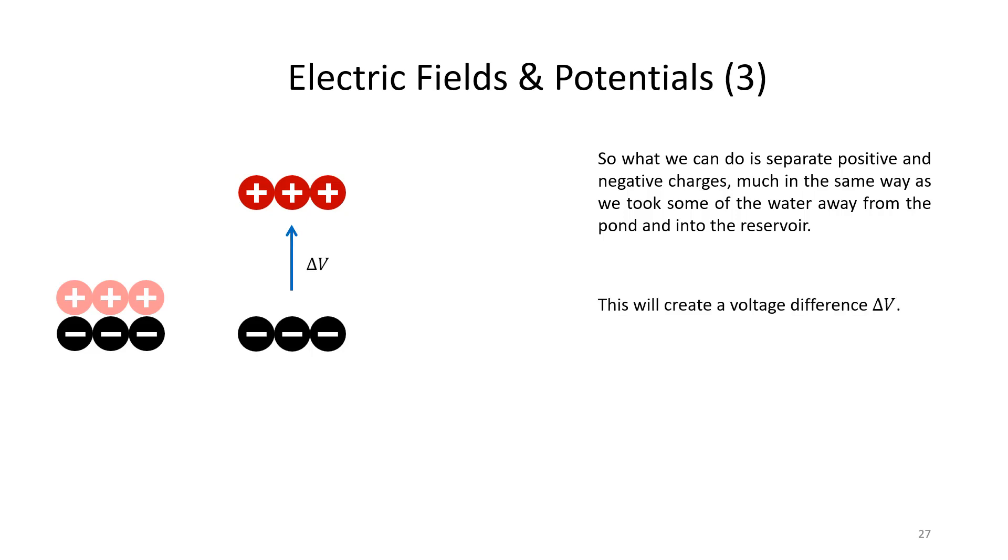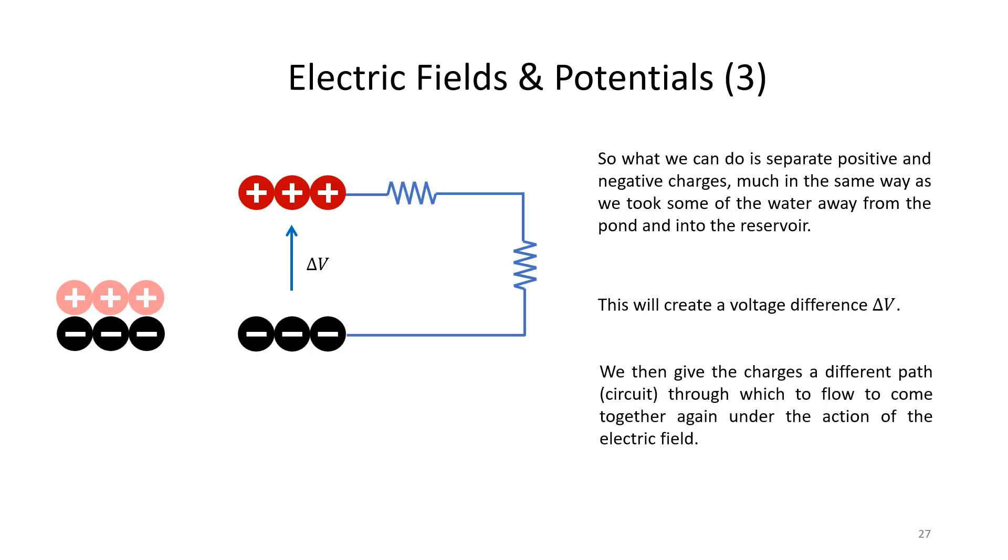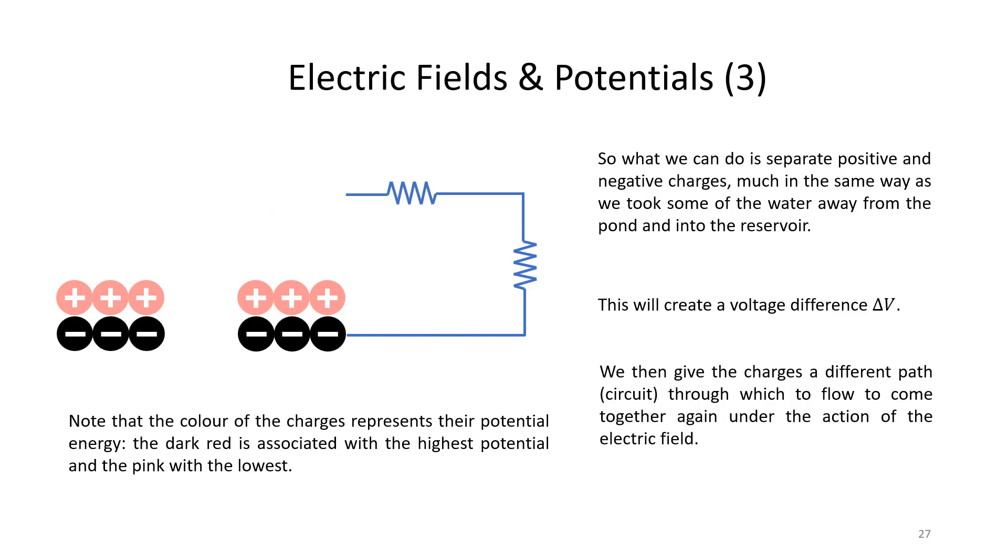This voltage difference will give the positive charges some potential energy, and if we connect a circuit between the positive and negative charges, some path for them to flow through, they will do just that. And as they do that they will gradually lose their potential energy until positive and negative charges are yet again brought together.